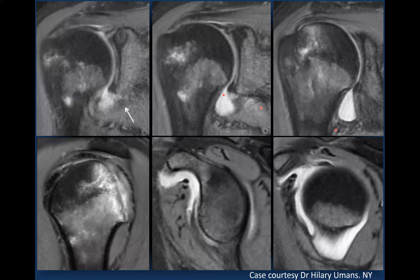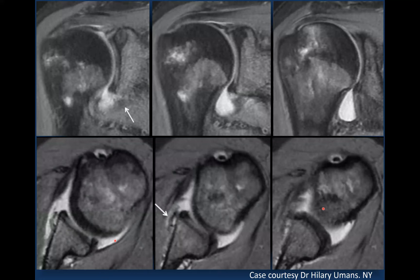A beautiful chronic GAGL case courtesy of Dr. Hillary Hillmans from New York shows the glenoid avulsion of the inferior glenohumeral ligament and capsule with an intact anterior inferior labrum. Bone marrow edema from the Hill-Sachs lesion is visible. On the sagittal view at glenoid level, stripping of the anterior capsule and anterior band of the inferior glenohumeral ligament is shown, while the humeral insertion is intact.